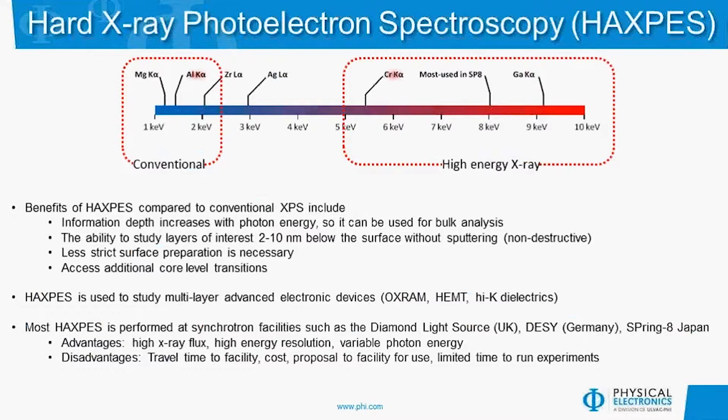HAXPES can be used to study layers of interest that are 2 to 10 nanometers below the surface without sputtering, making it non-destructive. Since HAXPES is not as surface sensitive as XPS, there are less strict requirements for preparing a sample surface. In addition, higher photon energies mean that higher energy core electrons can be accessed. Currently, HAXPES is used to study multi-layer advanced electronic devices such as Oxram, HEMT, or Hi-K dielectrics.